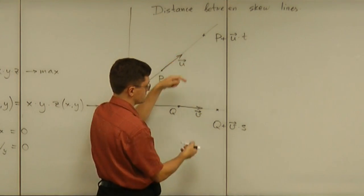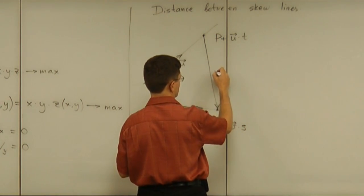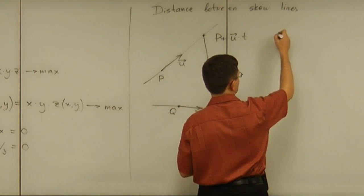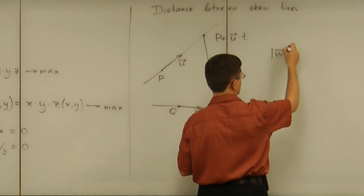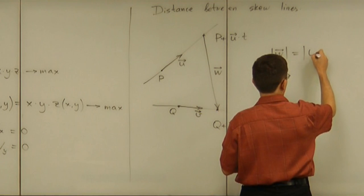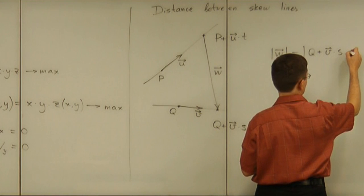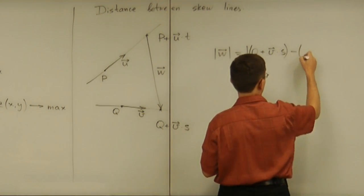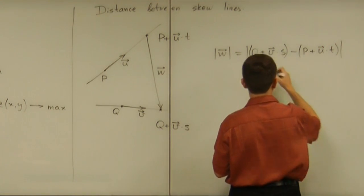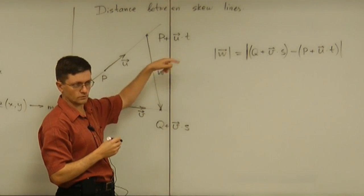And then what we want is to find the distance between them. So, we just subtract those two. And subtracting amounts to looking at a vector. So, let's call it w. So, what you look at is magnitude of the w, which is the magnitude of q plus v multiplied by s minus p plus u multiplied by t. And that is the quantity you want to minimize.